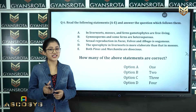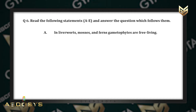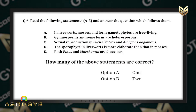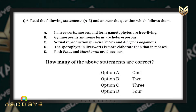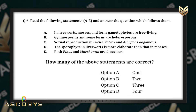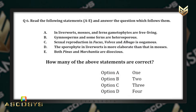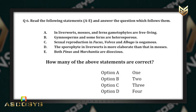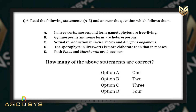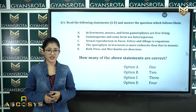Question number six: read the following statements A to E and answer. Statement A: in liverworts, mosses and ferns, gametophytes are free-living. Statement B: gymnosperms and some ferns are heterosporous. Statement C: sexual reproduction in Fucus, Volvox and Albugo is oogamous. Statement D: the sporophyte in liverwort is more elaborate than that in mosses. Statement E: both Pinus and Marchantia are dioecious. How many of the above statements are correct? Options: A) one, B) two, C) three, D) four.